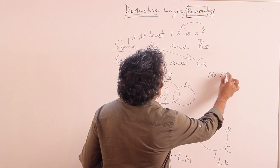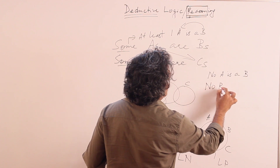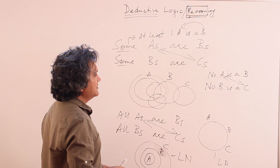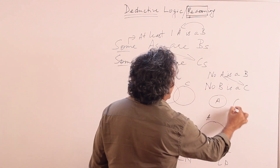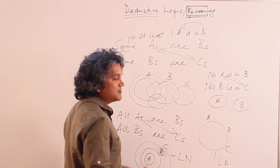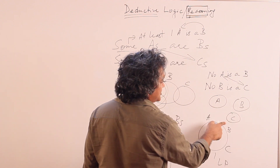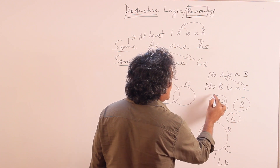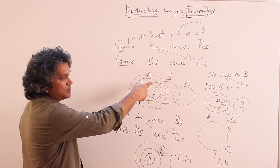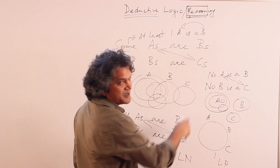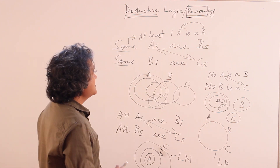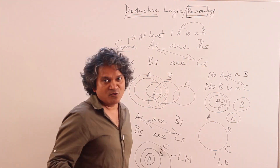One more: suppose I say 'No A is a B' and 'No B is a C.' Can you show any relationship between A and C? The answer is no. A and B cannot touch because no A is a B; B and C cannot touch because no B is a C. But whether A and C can touch is unknown — there are multiple possibilities. This gives us the second shortcut: if there are two 'no's in the premises, you can immediately discard the question. Two 'some' premises cannot take you to an answer, and two 'no' premises cannot take you to an answer either.